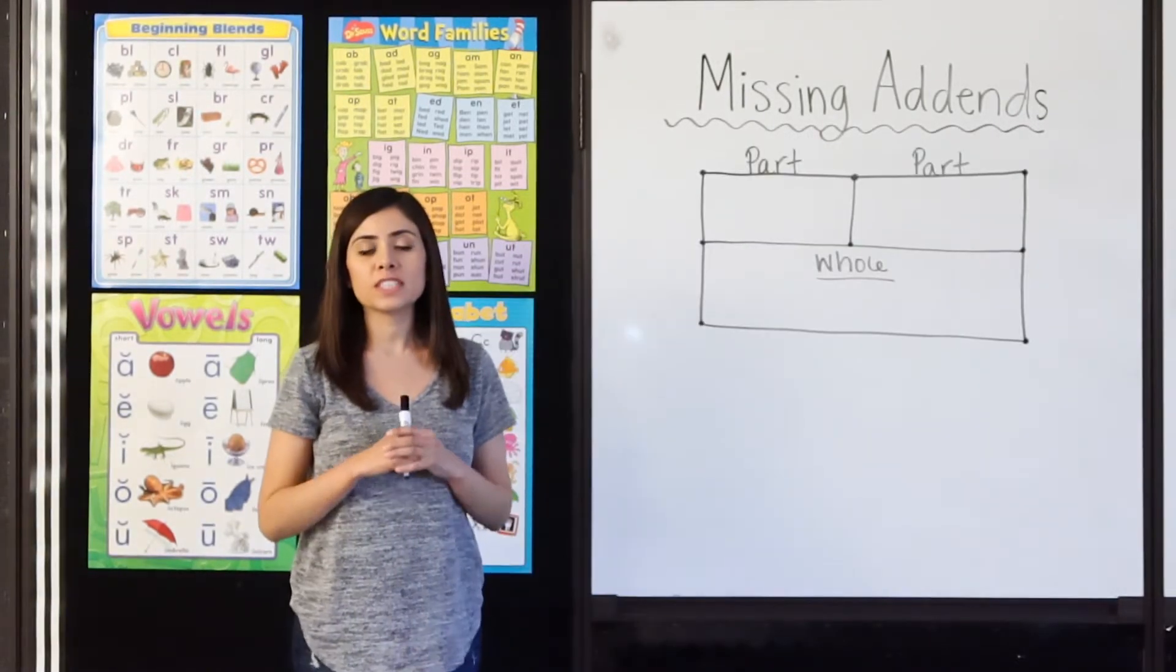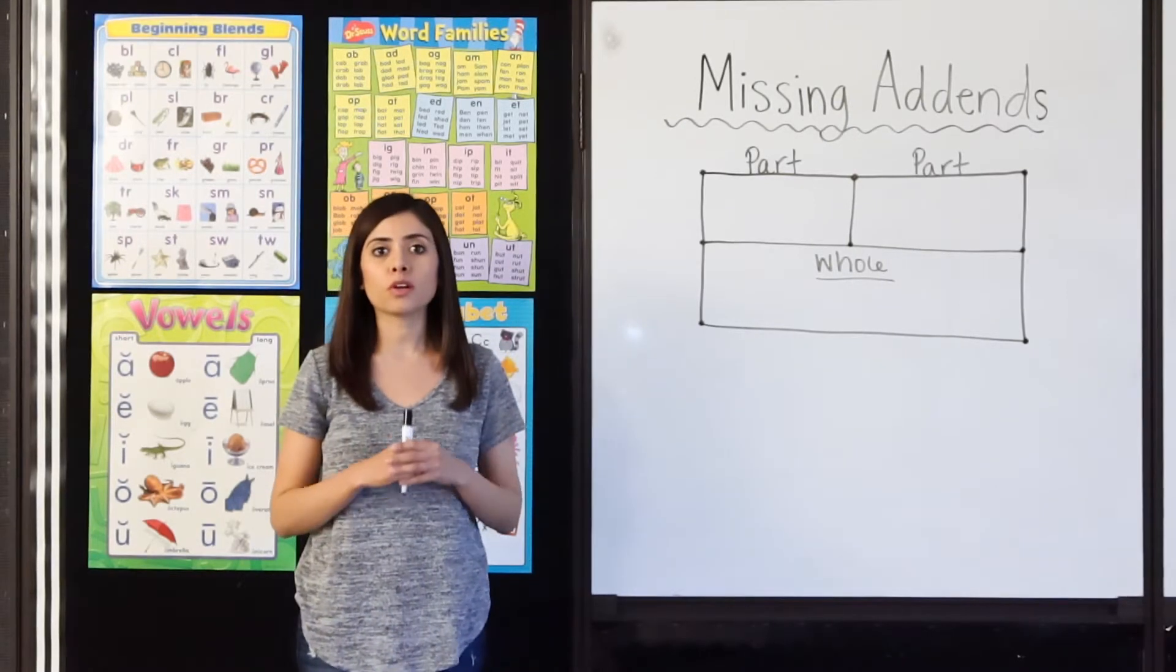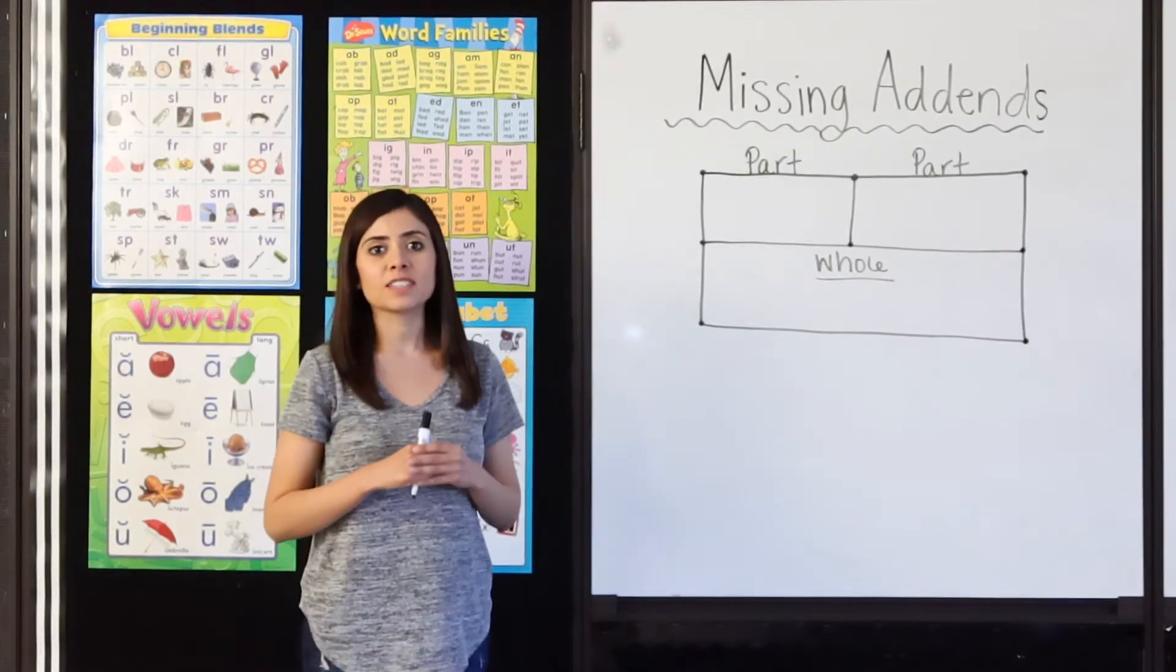Okay, so if you've seen some of our last videos, you probably remember the part-part-whole chart. We'll use this part-part-whole chart to find our missing addends.